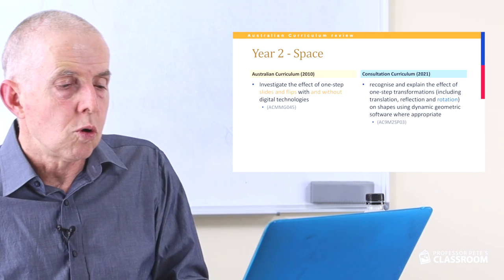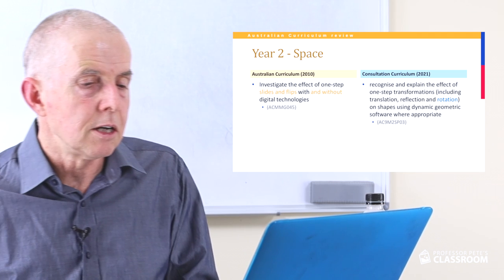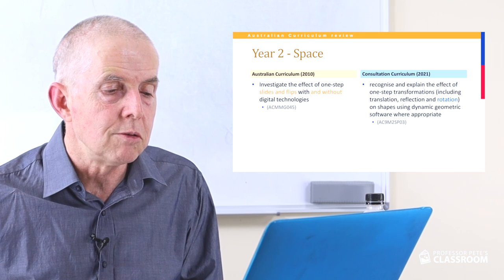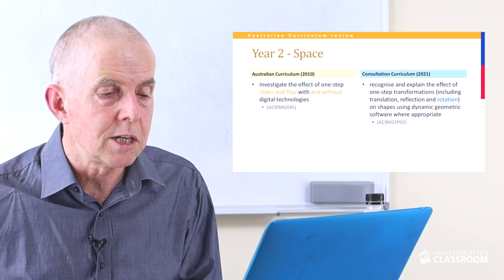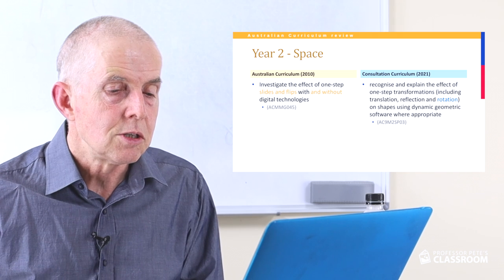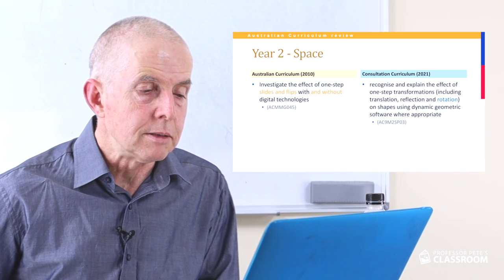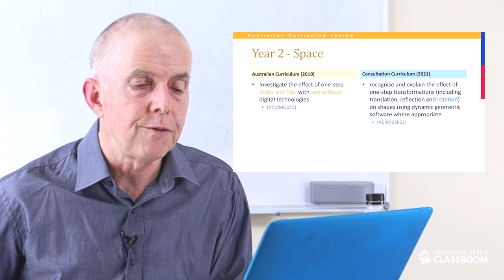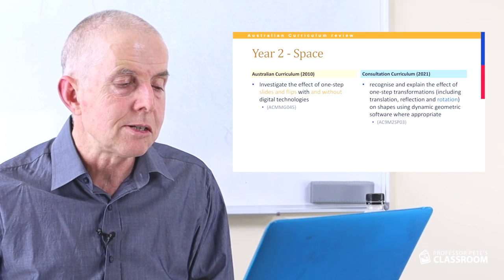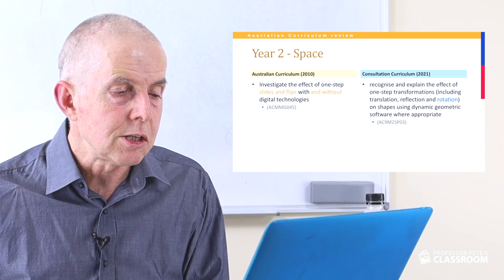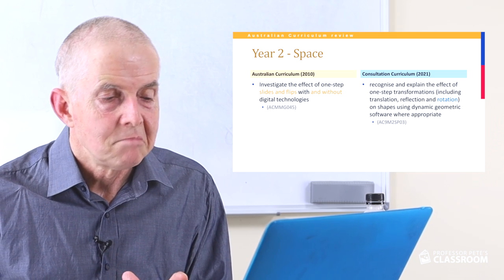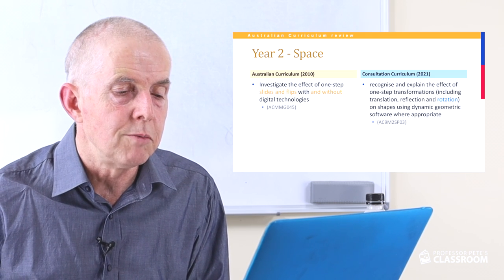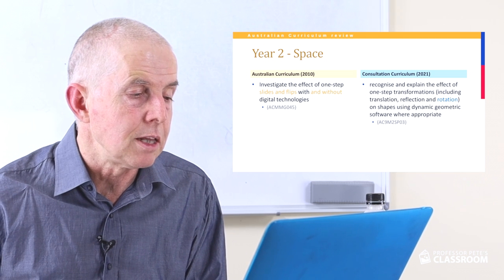Space descriptor three is almost identical to the old one: recognise and explain the effect of one-step transformations, including translation, reflection and — new addition — rotation on shapes using dynamic geometric software where appropriate. The old curriculum used the terms slides and flips rather than translation and reflection. Using the correct technical language is a positive move, and adding rotation is also a good thing.